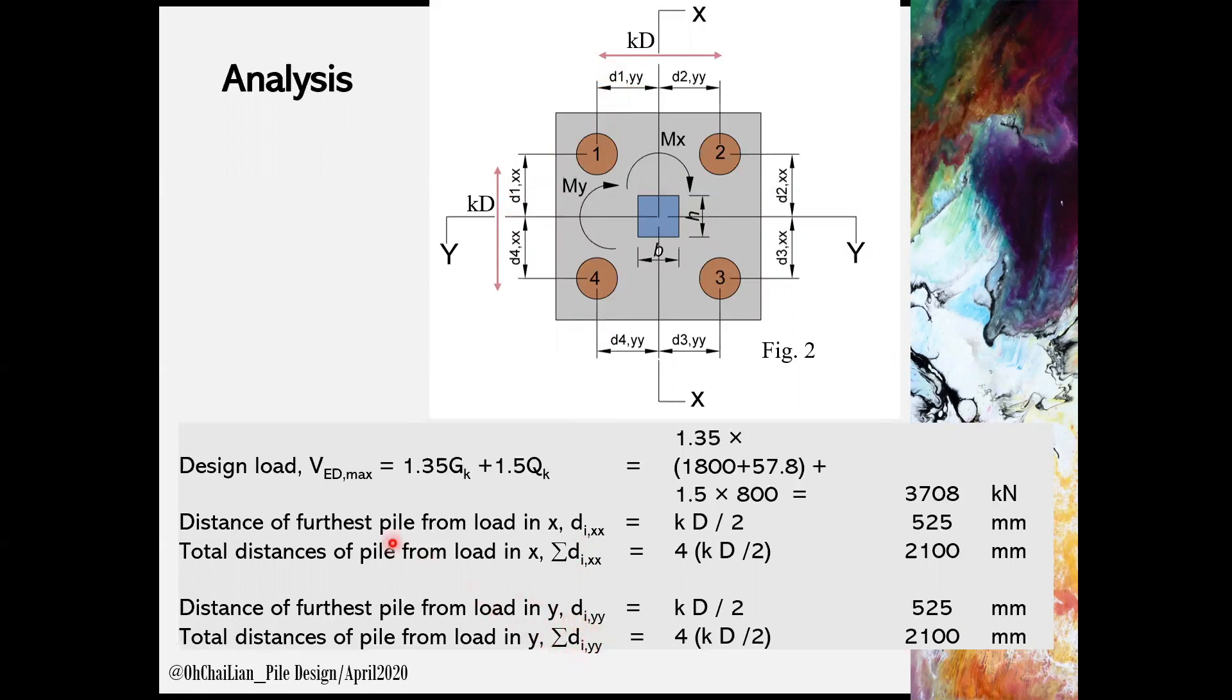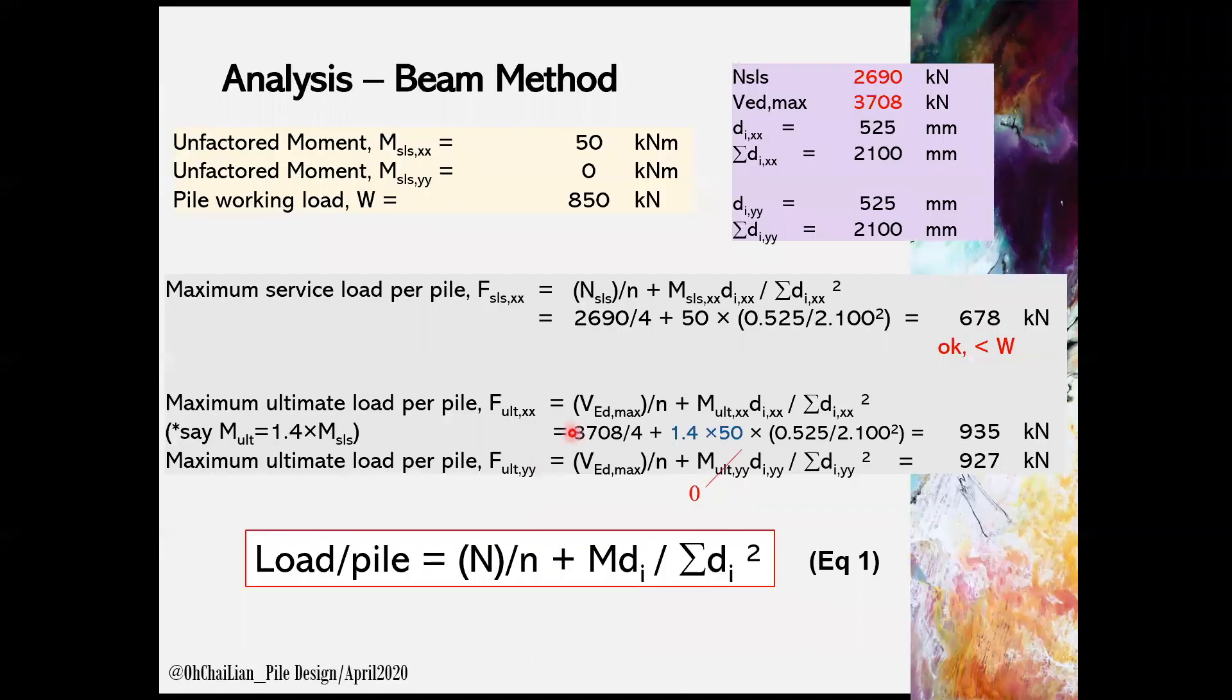The design load VED max can be determined using 1.35 GK plus 1.5 QK. We can determine the imposed axial load on each pile using equation 1. Uppercase N is axial load, lowercase n is number of piles.